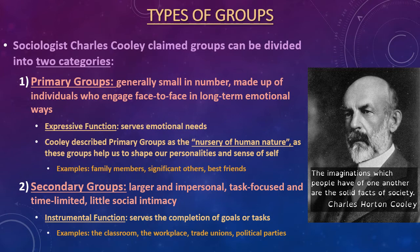Cooley described primary groups as the 'nursery of human nature,' as these groups help us shape our personalities and our sense of self. Examples include family members, best friends, and significant others. If you think back to chapter five and the social agents of socialization, the family and peer groups, that same category can be applied to primary groups.